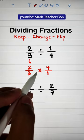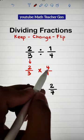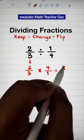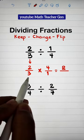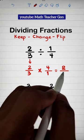And as you can see, we can multiply the fractions directly. 2 times 4 equals 8 over 3 times 1, which equals 3.